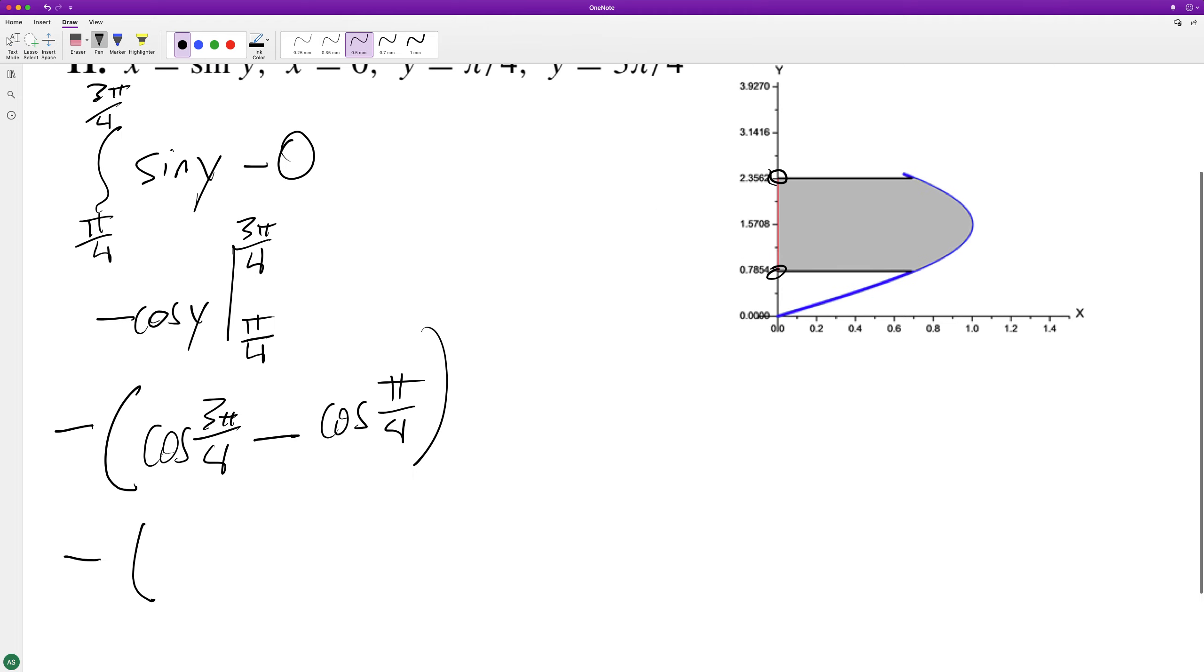When we do this, cosine of 3π/4 is negative √2/2, and cosine of π/4 is equal to √2/2.